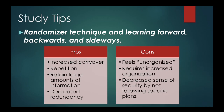The pros of the randomizer technique and learning forward, backwards, and sideways far outweigh the cons. Pros include increased carryover, lots of repetition, and decreased redundancy because you're seeing varied information — all of which help you retain more. The cons are that it feels a little unorganized. Many study plans give you a sense of organization, like moving through pages of Therapy Ed like a book. But that's not the best way to learn — it just feels organized. This approach requires you to track which parts of Therapy Ed or Score Builders you've covered since you're randomizing information, and it can decrease your sense of security from not following a linear study plan.